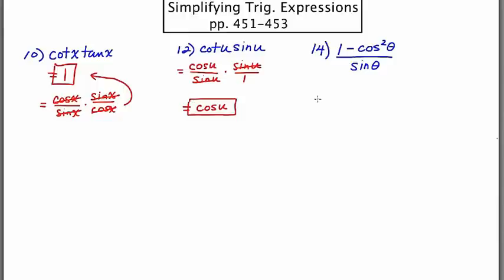For the third problem, number 14, because there are elements that are squared, it's a sign for me that I should consider using the Pythagorean relationships. And I know that sine squared theta plus cosine squared theta is equal to one.